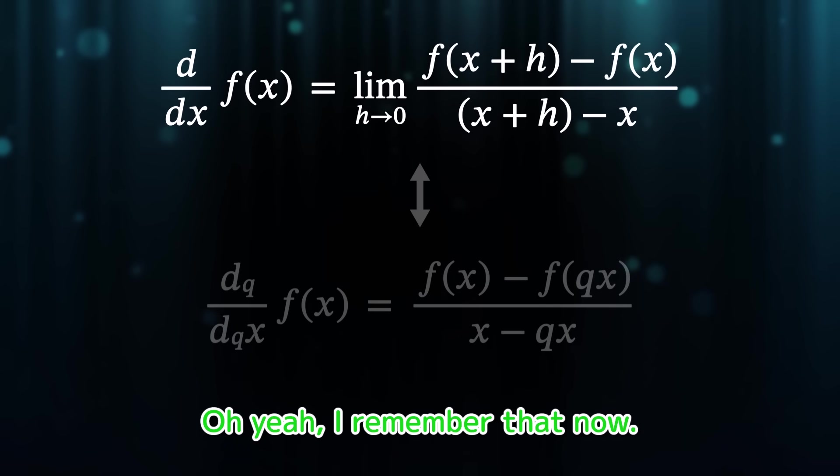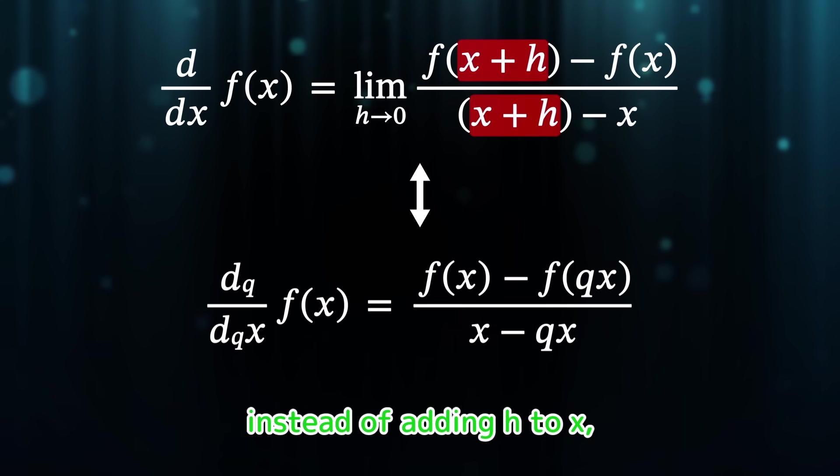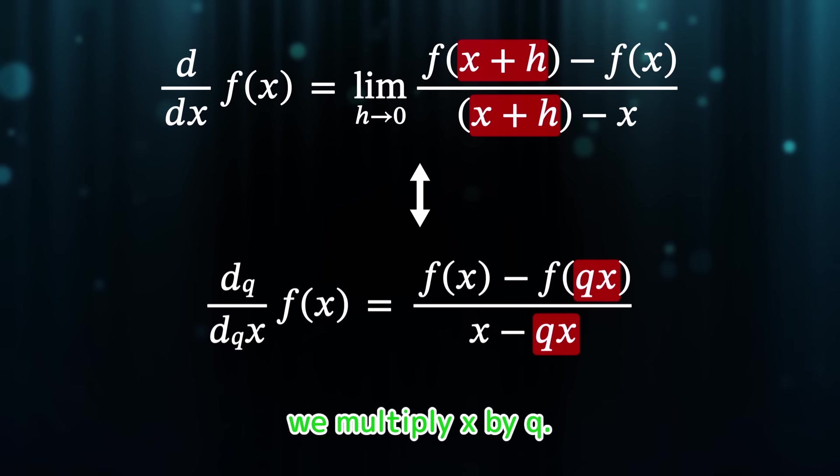Here, we want to represent an infinitesimal change, but there's no actual infinitesimal number in the real numbers. So instead, we take the limit as h approaches 0 to represent that infinitesimal change. That was the definition of the usual derivative. Oh yeah, I remember that now.